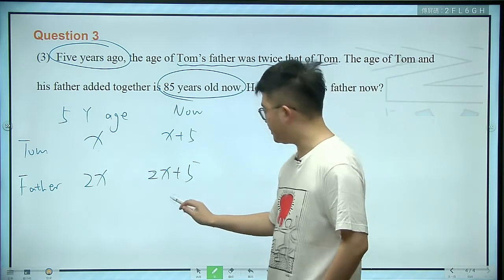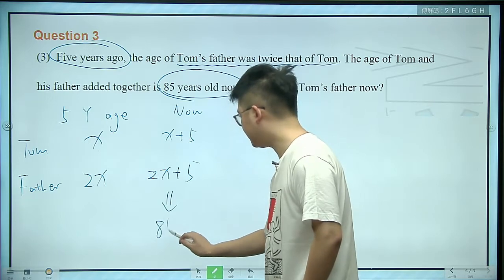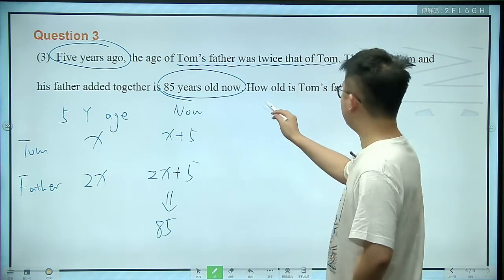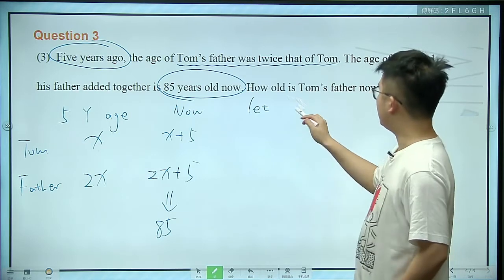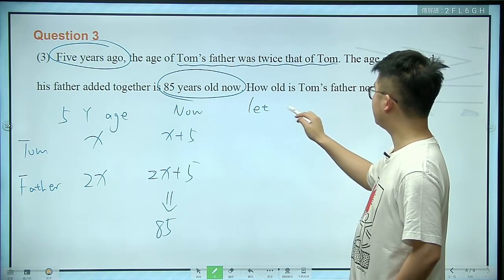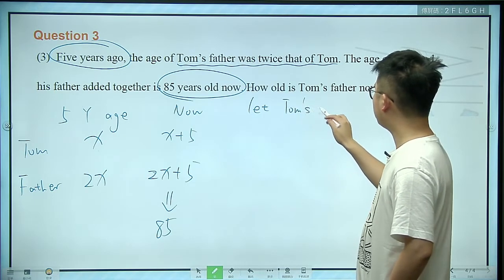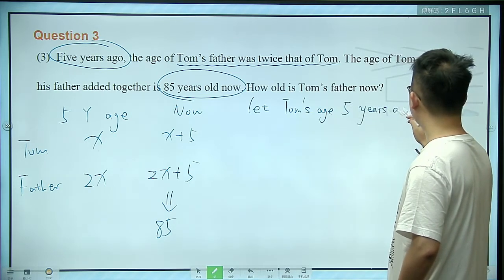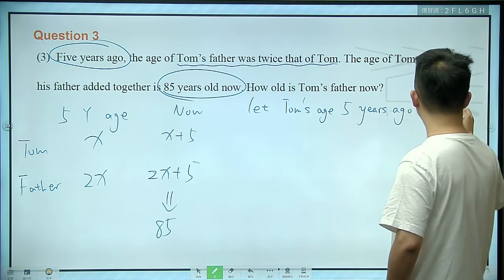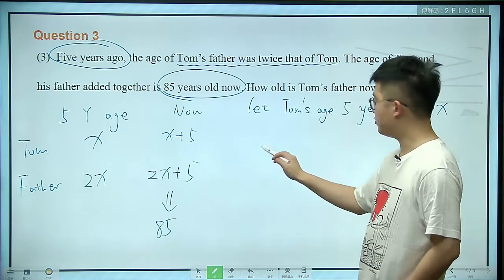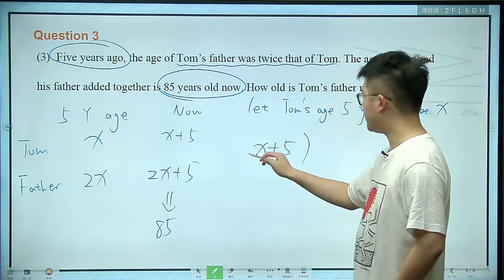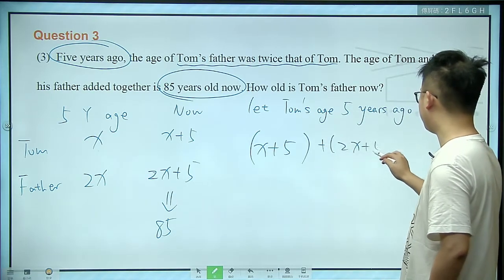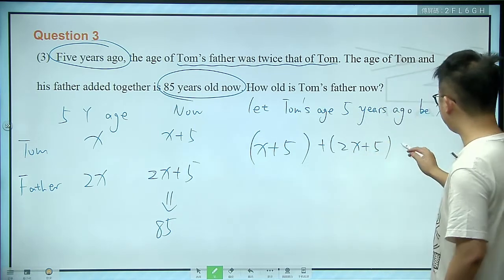These two ages add up to 85 this year. Now we can see clearly how to set up the equation. Let Tom's age 5 years ago be x. We write the equation: x plus 5, which is Tom's age now, plus 2x plus 5, which is his father's age now, adds up to 85.